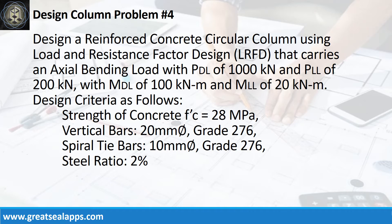Design criteria are as follows: strength of concrete is 28 MPa, vertical bars are 20 mm bar grade 276, spiral tie bars are 10 mm bar grade 276, and the steel ratio is 2%.